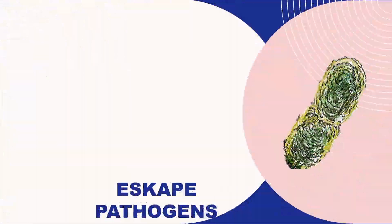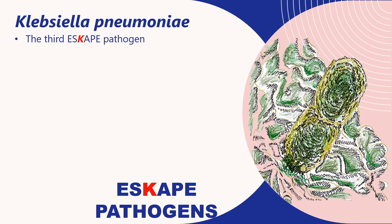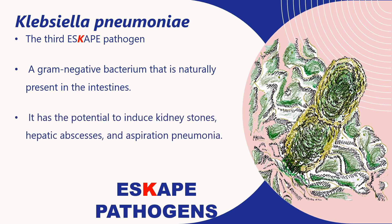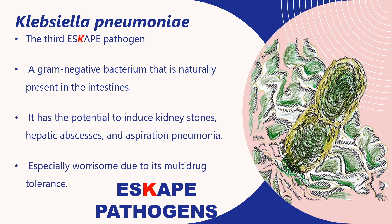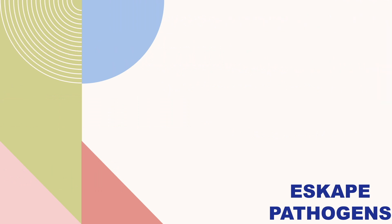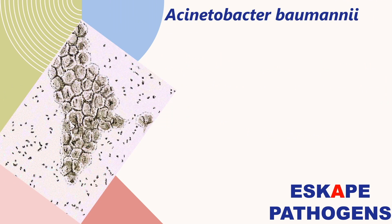The next letter, K, represents Klebsiella pneumoniae, which is a gram-negative bacteria that is naturally present in our intestine. This can cause kidney stones along with hepatic abscesses. The next letter, A, represents Acinetobacter baumannii.